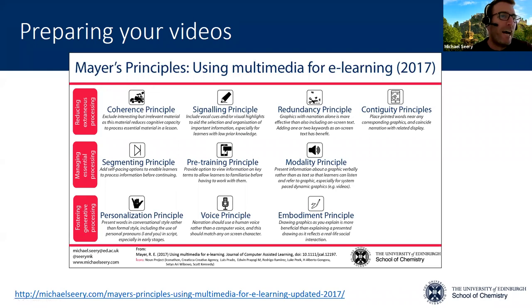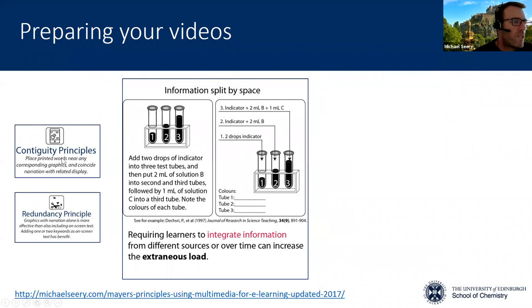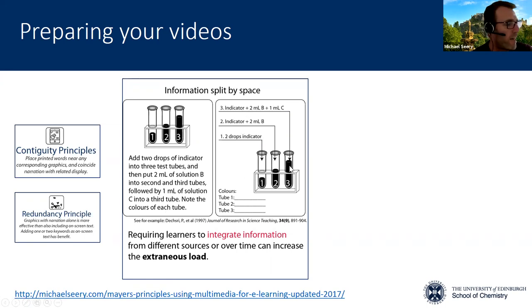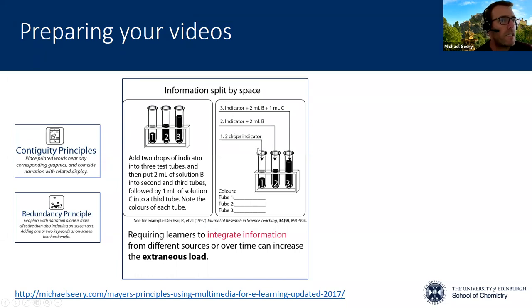I'm breaking many of the rules here myself, but I'll flag a few. The first one is what's called the contiguity principle. This essentially says: if you have some graphic or some molecule you're talking about, or some detail about a chemical experiment, put the words near the corresponding graphics. This research study showed that students given a nice graphic with instructions where the text was more clearly associated directly with the graphic performed much better — students were much more able to recall and describe the experiment. The reason comes back to the contiguity principle and how people process information: it's much easier to integrate information simultaneously.